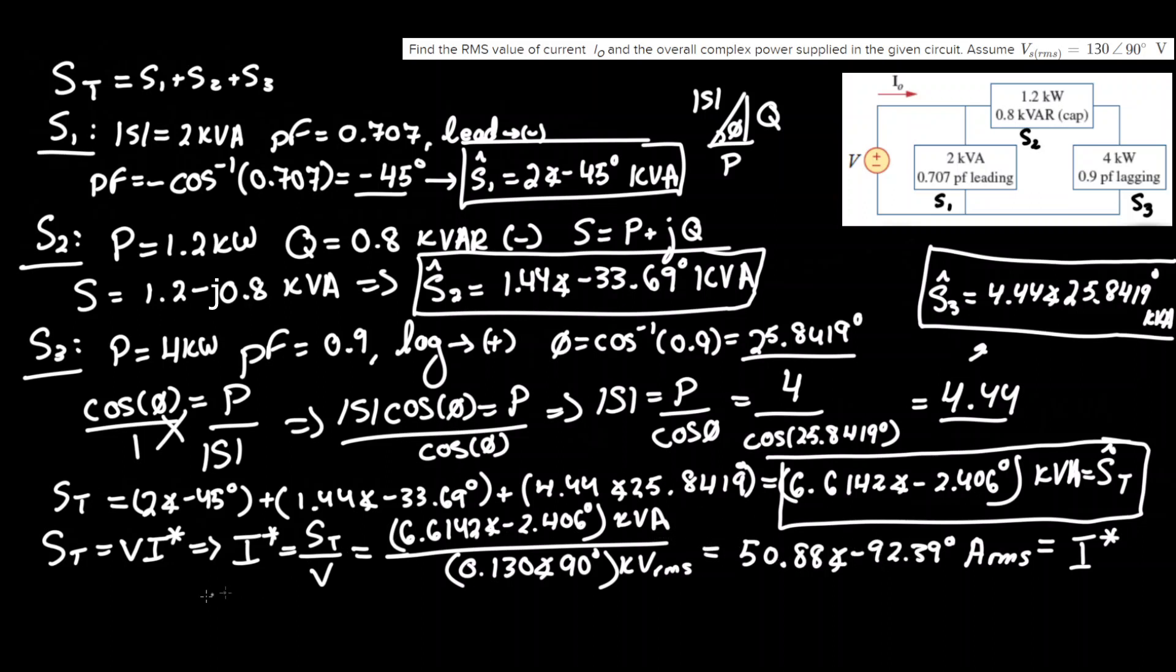Remember to reverse the complex conjugate, all you got to do is take the negative of the phase angle. So that yields us our final answer of I sub 0 equal to 50.88 angle positive 92.39 degrees amps RMS, and that will be our final answer.